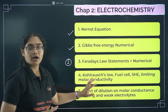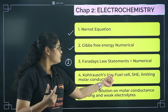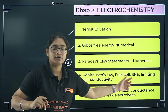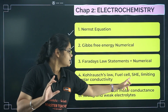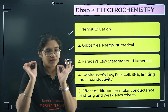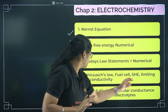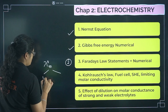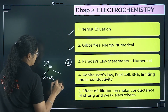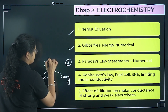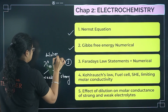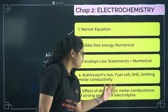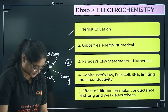Next, Kohlrausch's law, fuel cells, and limiting molar conductivity — learn all these definitions. For the fuel cell: its construction, notation, and reactions, including the diagram. For limiting molar conductivity, understand how molar conductivity changes for weak electrolytes and strong electrolytes, and the effect of dilution on molar conductivity — this is super important.